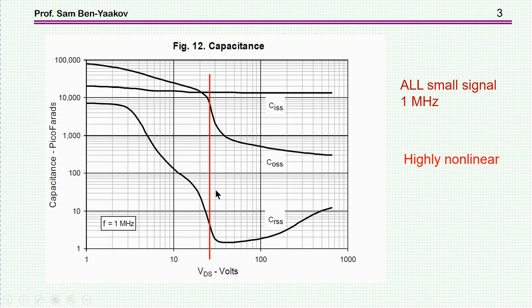These capacitances are highly nonlinear. Here is a typical curve from a power MOSFET datasheet showing capacitance versus drain-to-source voltage. The Y-axis is in picofarads — 1000 pF is one nanofarad, and 10 nanofarad is also shown. There is quite a bit of change, and this is a log-log scale.